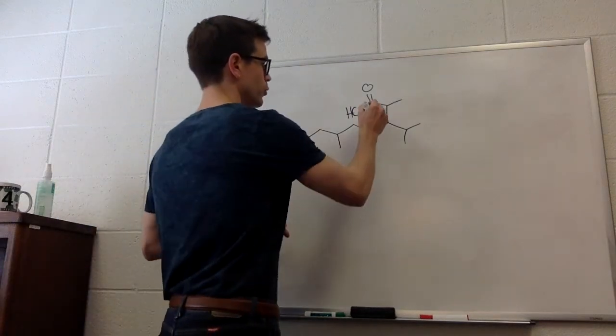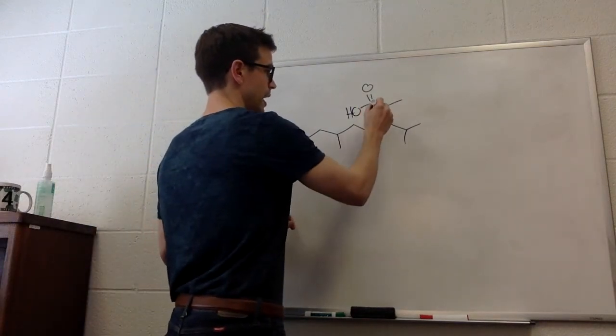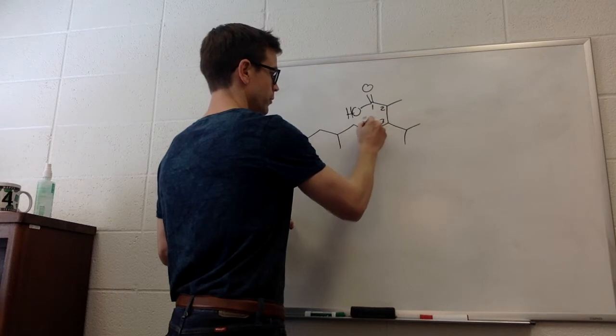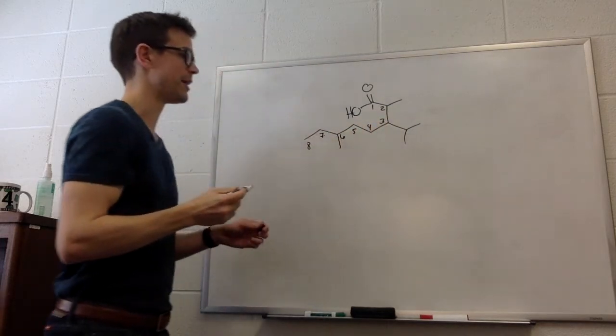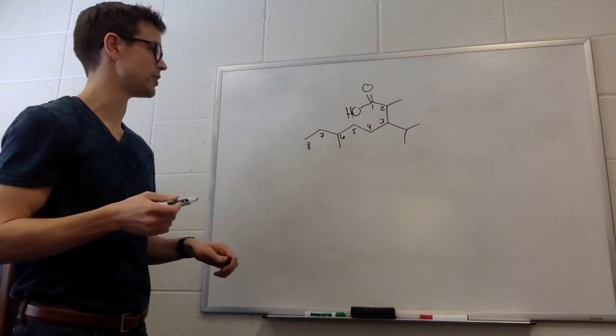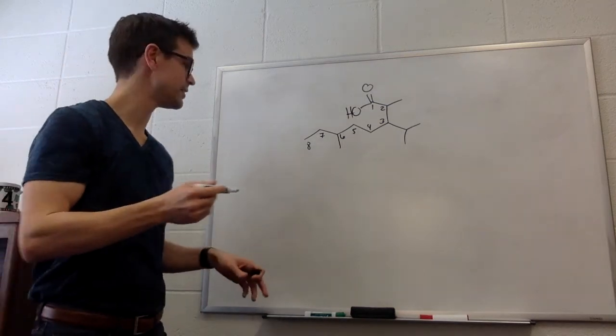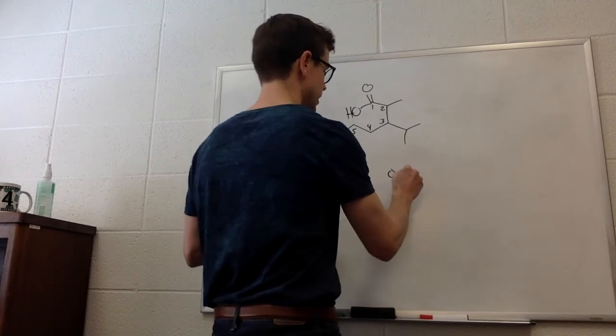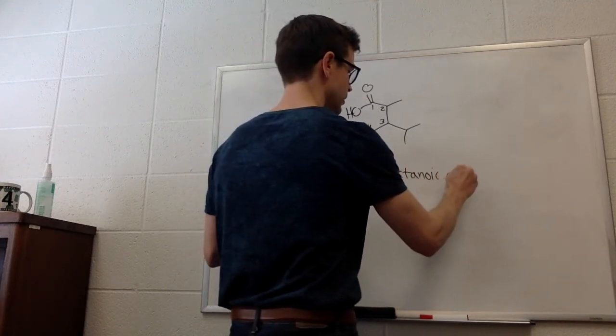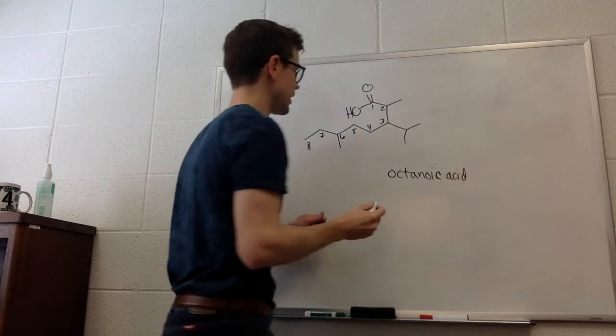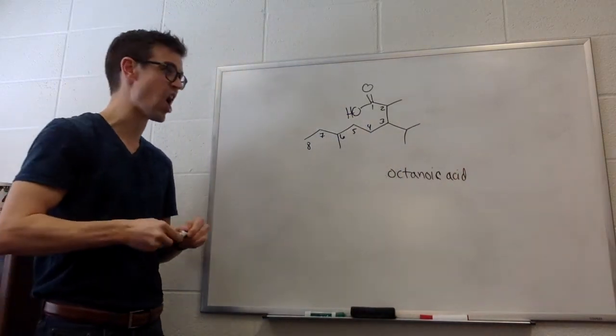So, following the rules, we have to number from the carboxylic acid. So, 1, 2, 3, 4, 5, 6, 7, 8. That's the longest chain containing that carboxylic acid. So, that's going to be octanoic acid. So, we'll actually just write that in octanoic acid. It's 8 carbons long. That's OCT oct.